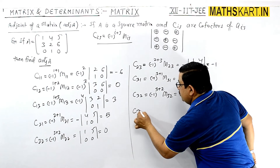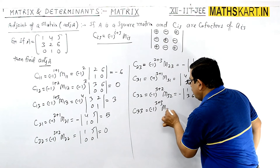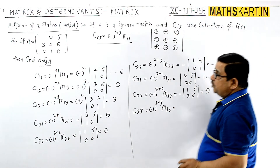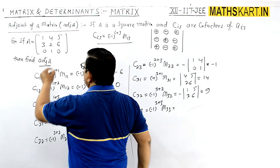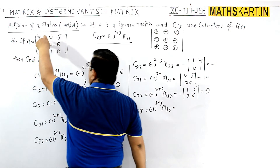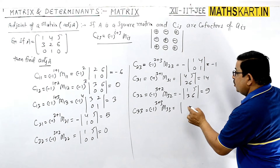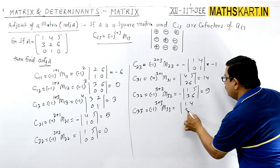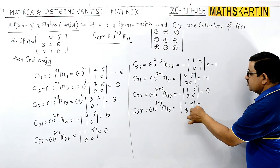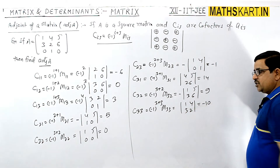C_33 = (-1)^(3+3) × M_33, which is positive. M_33 is the last element; remove that row and column, leaving |1,4; 3,2| = 2 − 12 = −10. The sign is positive so C_33 = −10. We have now found all the cofactors.